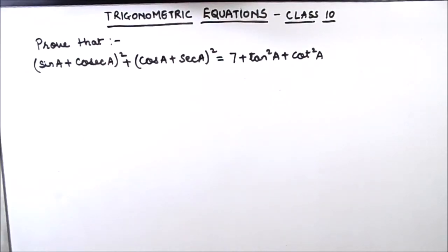Hello everyone, in this video we are going to learn how to solve trigonometric equations. The question is from class 10 syllabus. Prove that (sin A + cosec A)² + (cos A + sec A)² is equal to 7 + tan² A + cot² A.